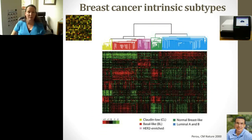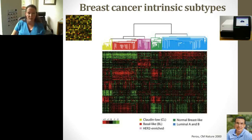About 15 years ago, Chuck Perou at UNC defined something called breast cancer intrinsic subtypes — subtypes defined by gene expression, not protein expression. Using microarrays, he was able to group different breast cancers into subtypes. There are about five subtypes represented, and they've been studied intensively. The one I'm highlighting with the arrow is basal-like breast cancer, which is what I'm going to talk about today.